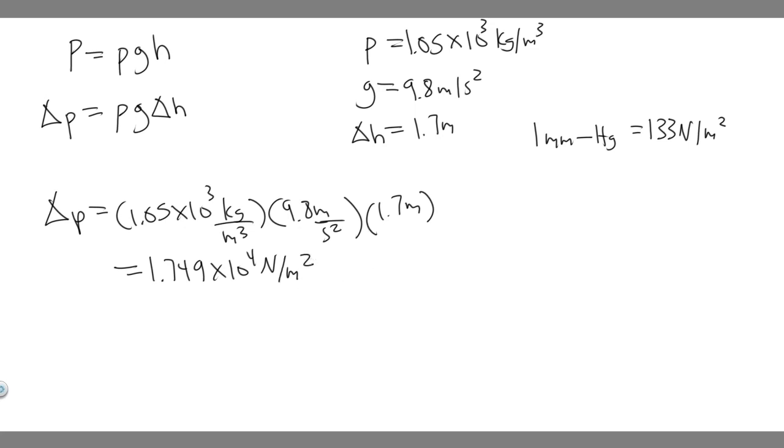So this was actually newton over meter squared. Sorry, I didn't write it like that. So newton over meter squared. Essentially, what we're going to do, if we want to convert, we just do 1 mm of mercury over 133 newton over meter squared. Because look, these are going to cancel and you're just going to get it in this unit. So we just got to divide by 133 essentially. So go ahead and do that. 1.749 times 10 to the 4 divided by 133.